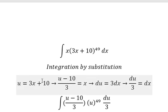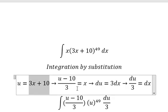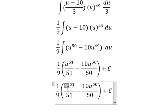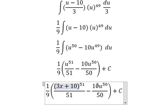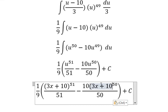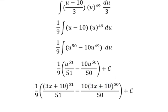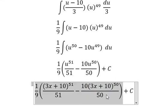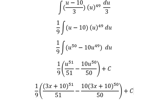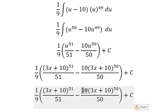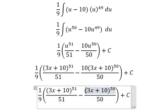About u, that is this one. And then we simplify 10 and 50. So we just have 1 over 5.